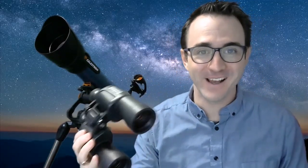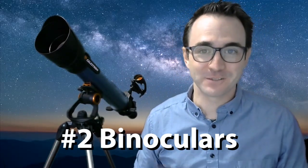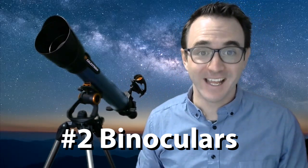Number two, binoculars. So I like to say there's a right telescope for every target. And sometimes the right telescope is no telescope. If you live where there's dark skies, binoculars are a far better tool for observing certain objects like the Andromeda Galaxy, the Double Cluster, the Coat Hanger, and a few others.